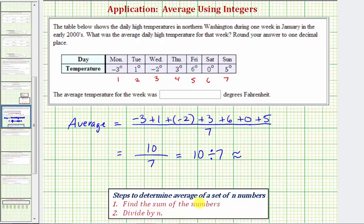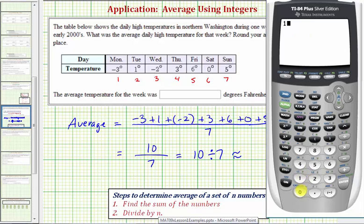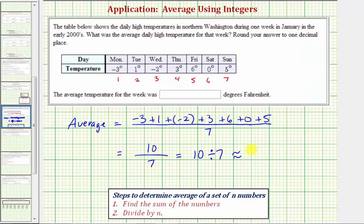So now we'll go to the calculator. Ten divided by seven, rounded to one decimal place, would be approximately one point four. So the average temperature for the week was one point four degrees Fahrenheit. I hope you found this helpful.